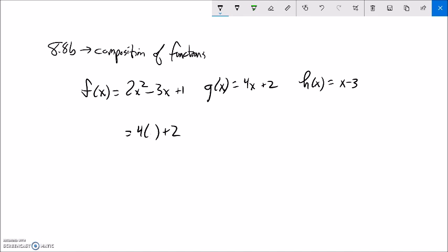So thinking about that, I could say something like g of 2a plus 5. Notice that would be 4 times 2a plus 5 plus 2. That's my input.